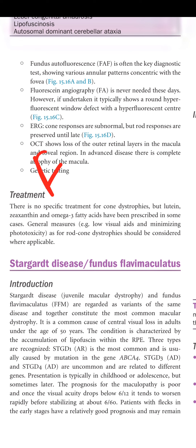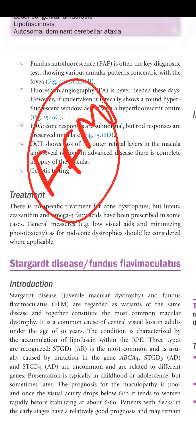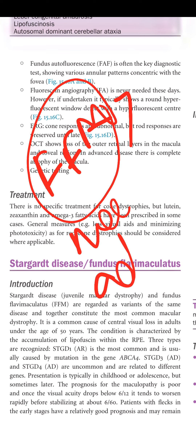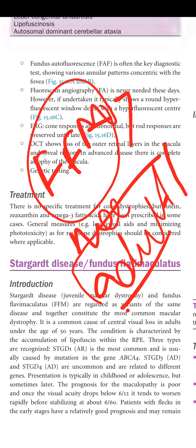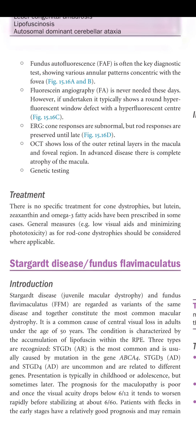FFM or Stargardt disease is a very common macular dystrophy and a common cause of central visual loss in adults under the age of 50 years. The condition is characterized by the accumulation of lipofuscin within the RPE, causing pigment deposition that leads to changes in the retina.